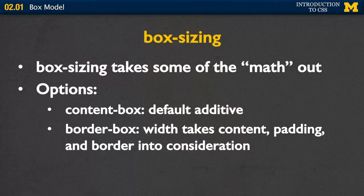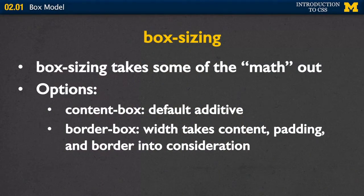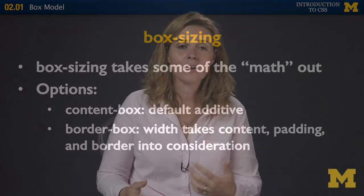Box-sizing takes some of the math out of that additive width and height. The default is content-box, which is the standard additive approach. Border-box takes the width, content, padding, and border all into consideration — so if you say you want the width to be 200 pixels, it actually makes the element 200 pixels minus the padding and border. Note that border-box accounts for padding and border but not margin.